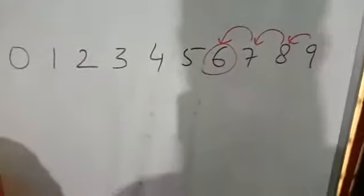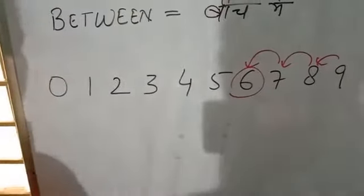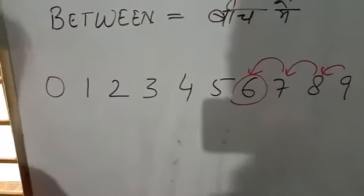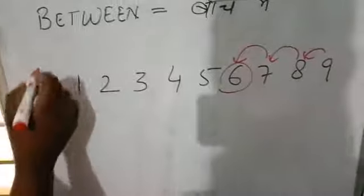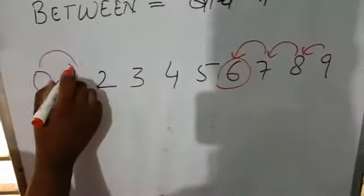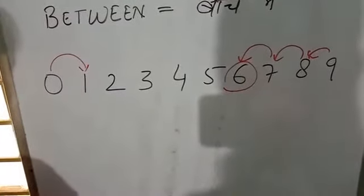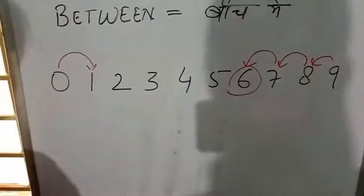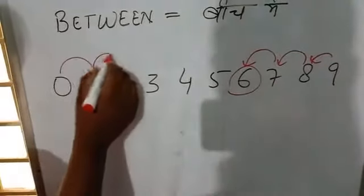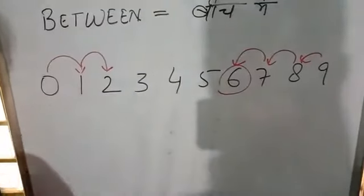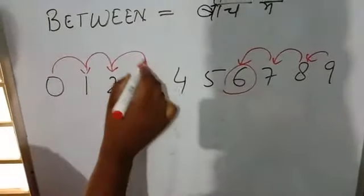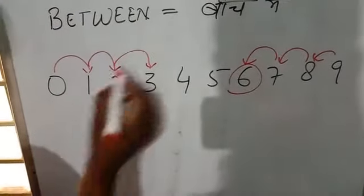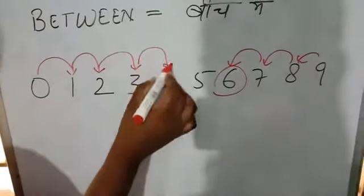Now, the next one is after. Tell me which number will come after 0? After 0, number 1 will come. Then, which number will come after 1? 2. Then, after 2? 3. Like that. After 3? 4.